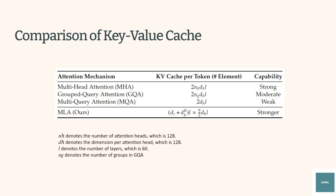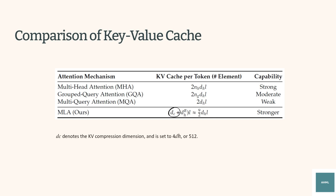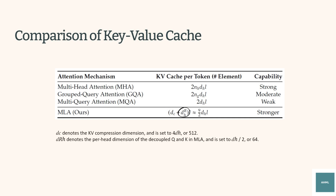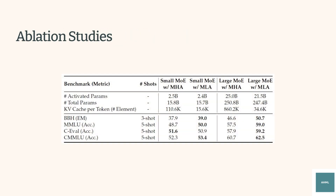MLA significantly reduces KV cache size, requiring only as much storage as GQA with 2.25 groups. In DeepSeek V2, the KV compression dimension is set to four times the size of each attention head, while the decoupled RoPE dimension is set to half the size of each attention head, allowing DeepSeek V2 to maintain low memory usage. Evaluation of MLA versus traditional MHA across MoE models of two different scales shows that MLA outperforms MHA on four challenging benchmarks, and requires significantly less KV cache — 14% of MHA's KV cache for small MoE models and only 4% for large MoE models — significantly improving efficiency.